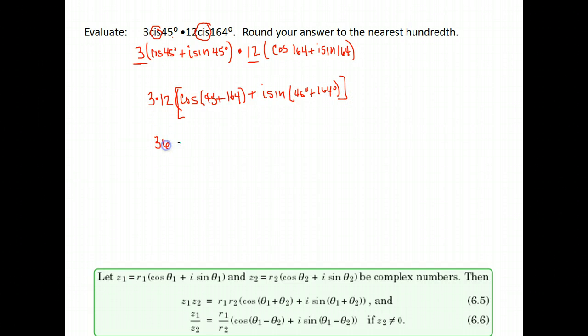Well 3 times 12 is 36. And then for my angles, 45 plus 164 is 209. So I have 36 times the cosine of 209 plus i sine 209.